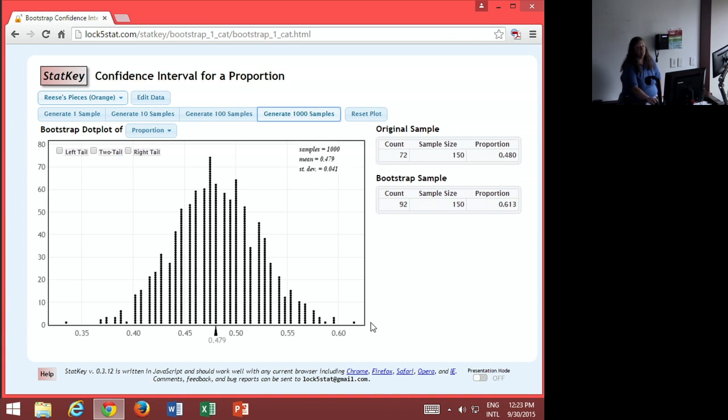Now, we can use this to find confidence intervals. If we click here on two tails, we have our 95% confidence interval. 2.5% have been cut off in the top and in the bottom, identified by these red dots.